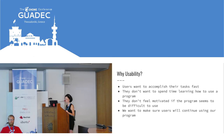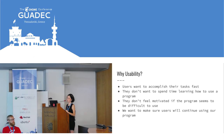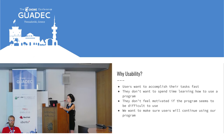So, why usability? Usability ensures that our users can use our software, but not only that — it ensures that users actually enjoy using our software. This is very important to make users want to use our software. And it is especially important for free and open source software, because if we want users to use free software instead of proprietary software, we want them to like using it. We have to work on usability to make it better and interesting so users can just open it and use it right away.